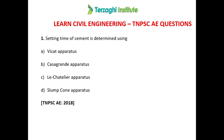Option D, Slump Cone Apparatus, is used for workability of concrete. The Lechatelier Apparatus is used for soundness of cement. The Casagrande Apparatus is used for setting time of cement.